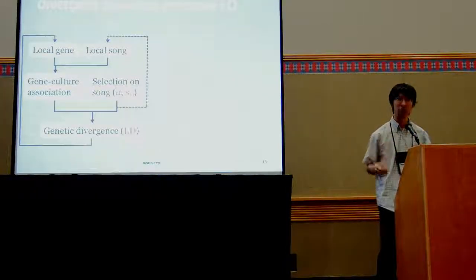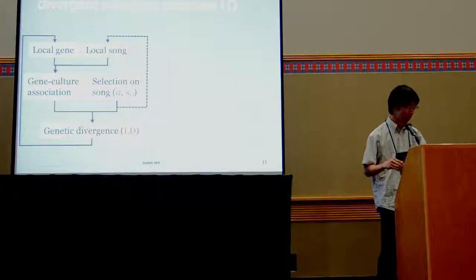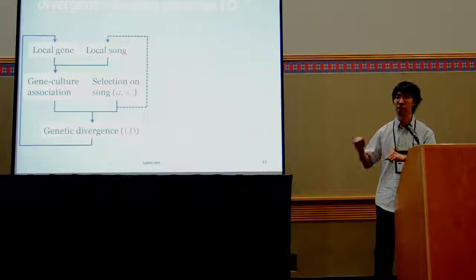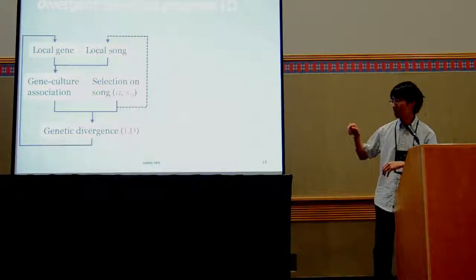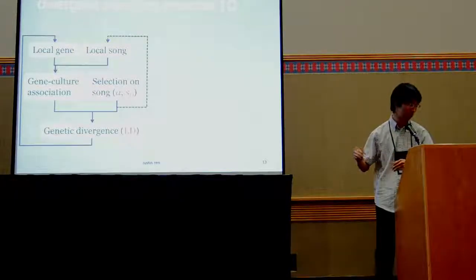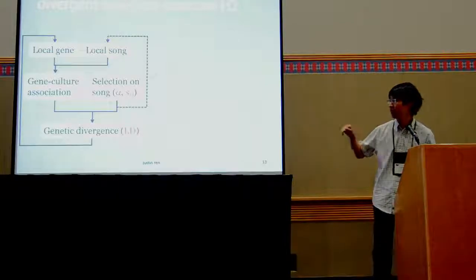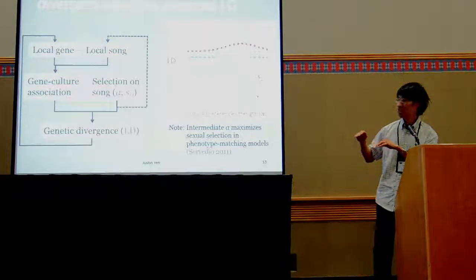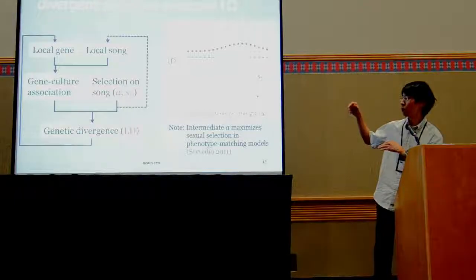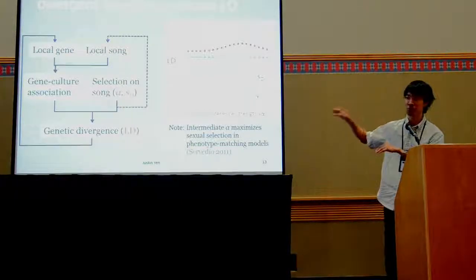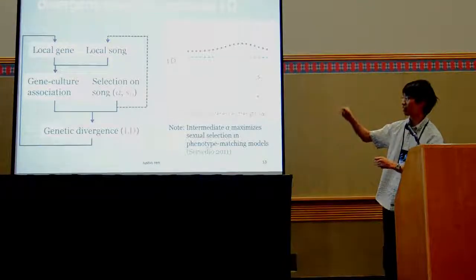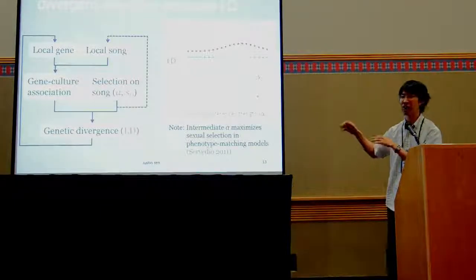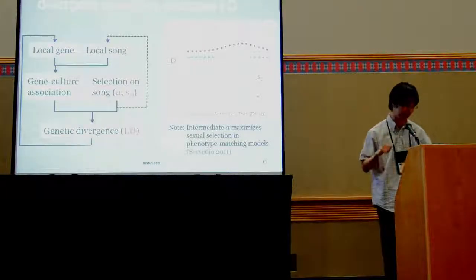I'll now show a figure supporting the first hypothesis. On the horizontal axis is the strength of assortative mating preference alpha. On the vertical axis is genetic divergence measured by linkage disequilibrium, and multiple lines represent different levels of divergent selection. Comparing between lines, stronger divergent selection leads to more genetic divergence — and remember, this is selection acting on cultural traits leading to stronger genetic divergence. Also, at intermediate female preference strength, which previous studies show actually leads to stronger sexual selection, you also have the strongest linkage disequilibrium.